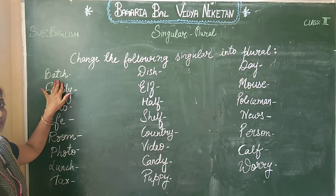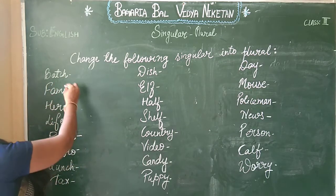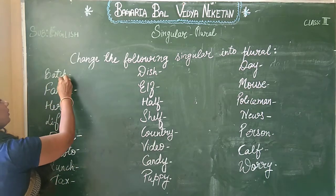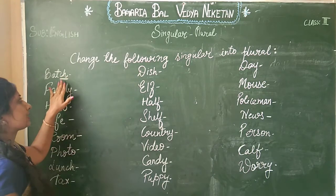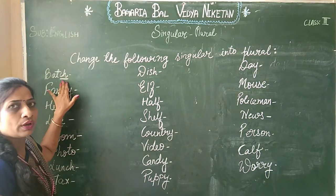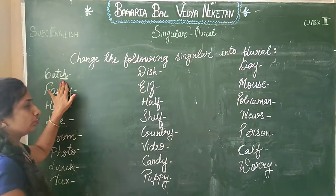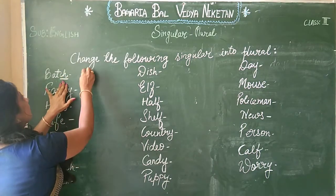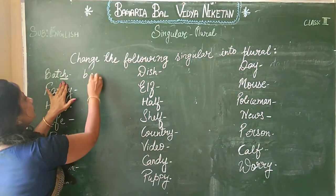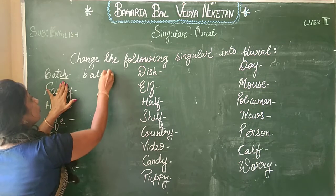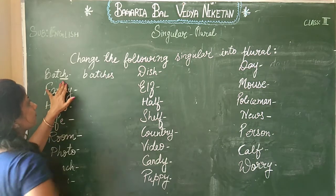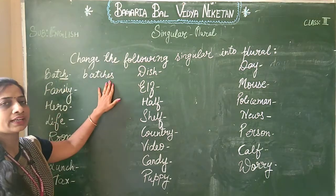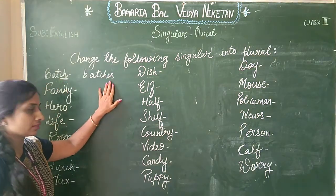The first word is 'batch'. In this word at the end there is CH. So as per the rule this spelling will be changed into 'batches'. What comes here? ES.